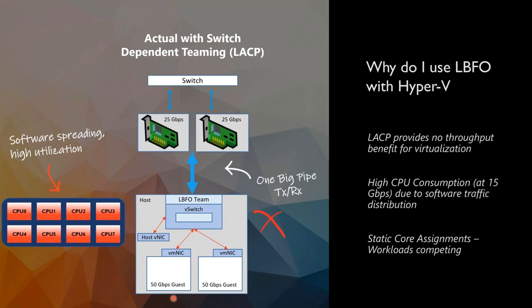In summary: LACP really does not provide any throughput benefits for virtual environments — none. It actually causes higher CPU consumption because we're unable to offload onto more VMQs. Dynamic VMMQ doesn't work with LBFO, so we have static assignment of cores. If multiple VMs land on the same core, workloads compete and you can't move them to available CPUs, resulting in very hot CPUs. This is what LACP actually looks like in Hyper-V.